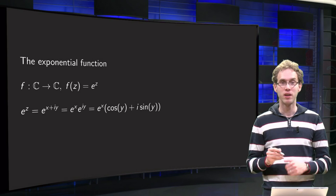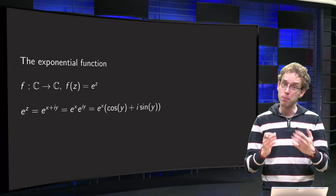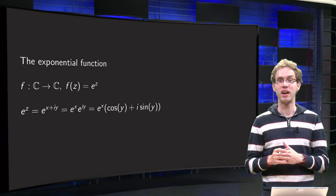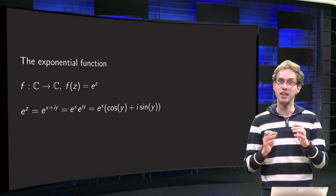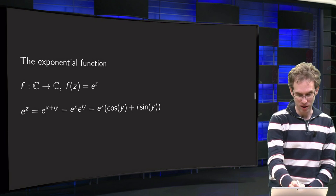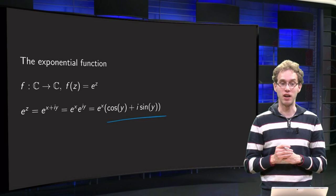f from C to C, f of z equals e to the power z. Plug in z equals x plus iy, and we have e to the power x plus iy, and we define this as e to the power x times e to the power iy. We know e to the power iy already from the Euler formula: it's cosine y plus i times sine y.